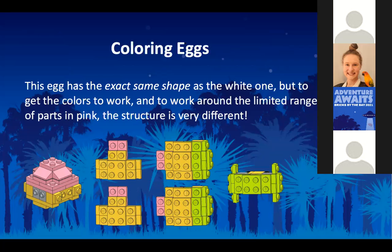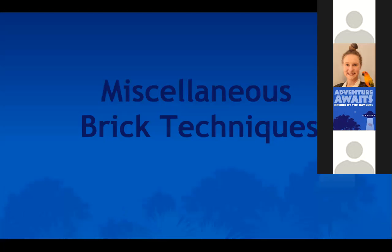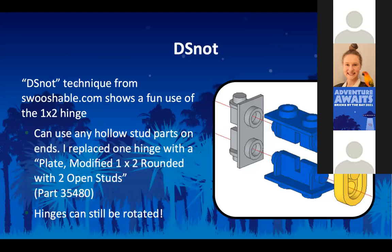A couple more of my models built around the same theory: the Stay Puft Marshmallow Man's head has the face with studs up, but the sides, back, and top are all like Travis spheres. The bunny is very much like that, and the teddy bear is just a really big, not very round Travis sphere shape. You can use the same technique with other shapes besides round ones.